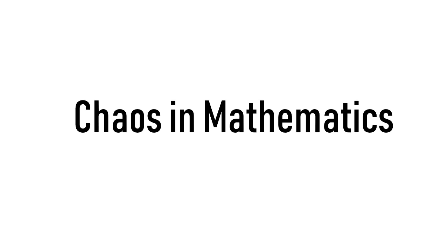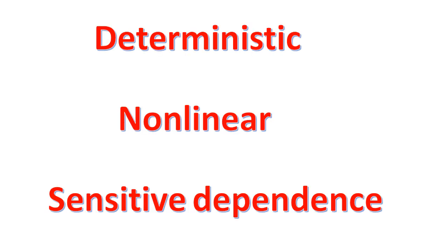It is defined by the properties of deterministic, nonlinear, and sensitive dependence. These are the three fundamental properties of chaos. We will learn what these properties are and why they are very important in cryptography.